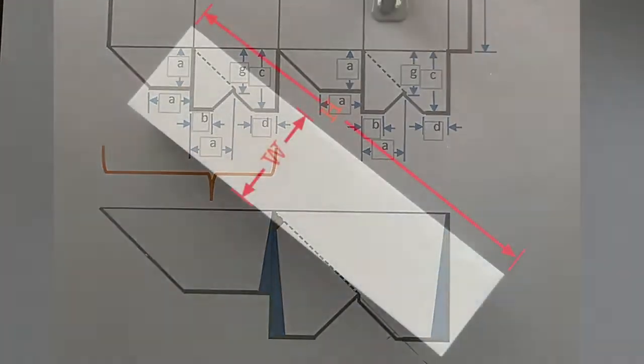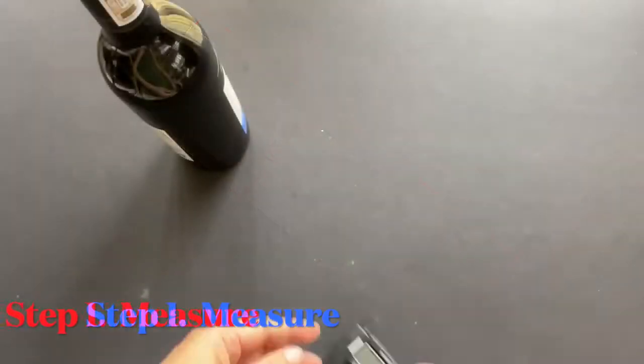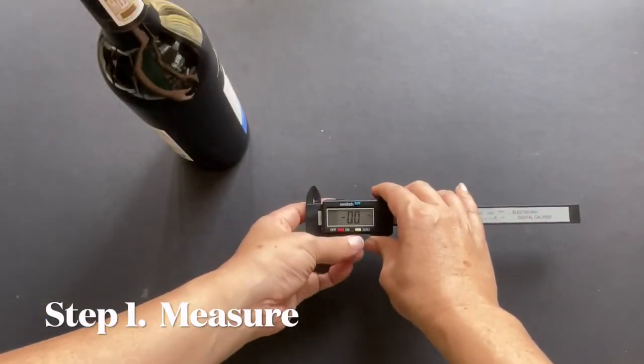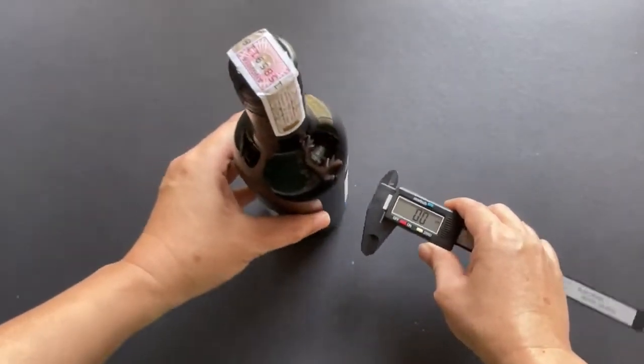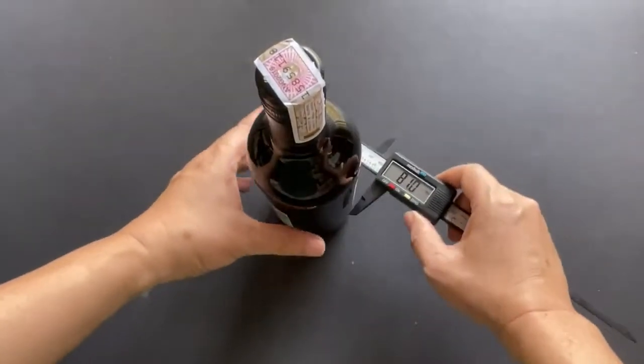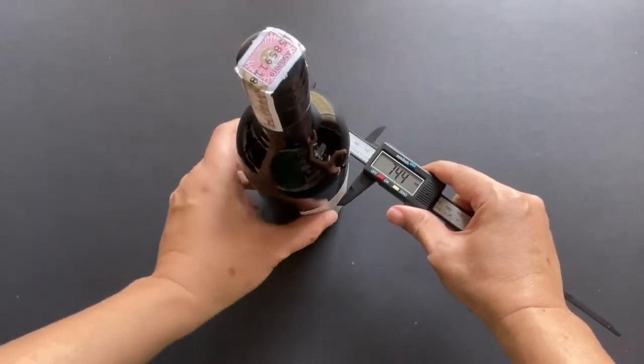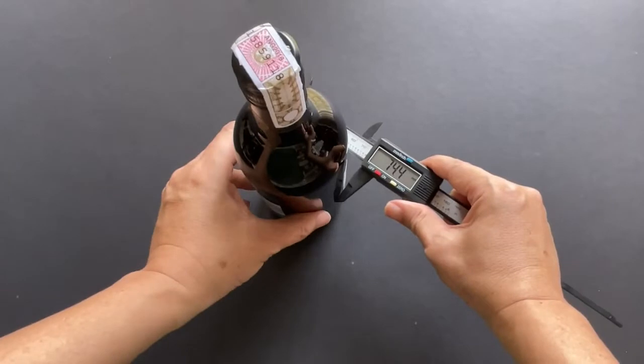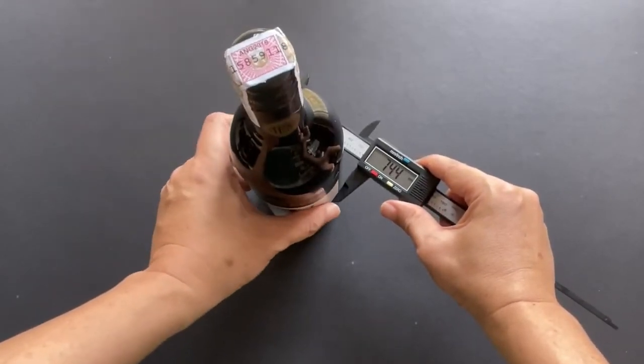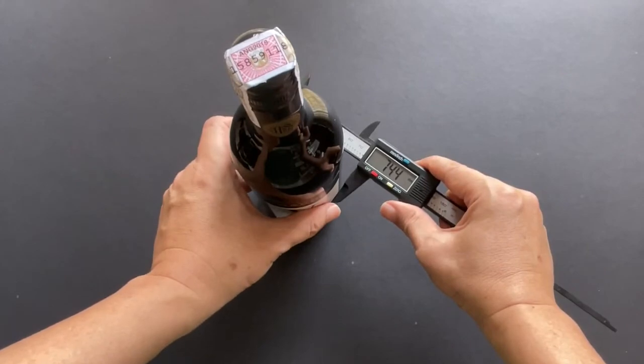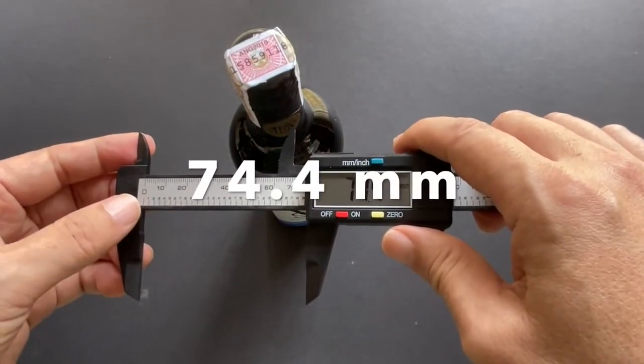To determine the width and height of the box, we need to measure the diameter and height of the wine bottle. The easiest way to measure the diameter is by using a digital caliper. Here I set it to millimeter measurement. Rotate the bottle just to verify the consistency of the diameter and measurement. Here I got a measurement of 74.4 millimeters.